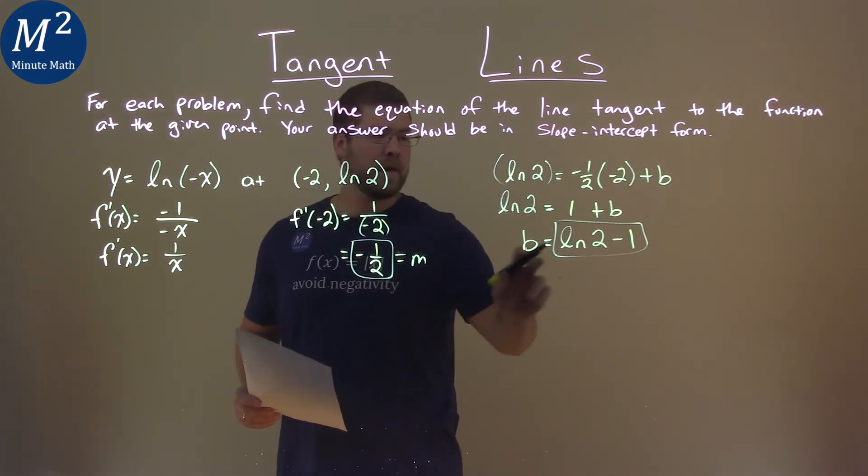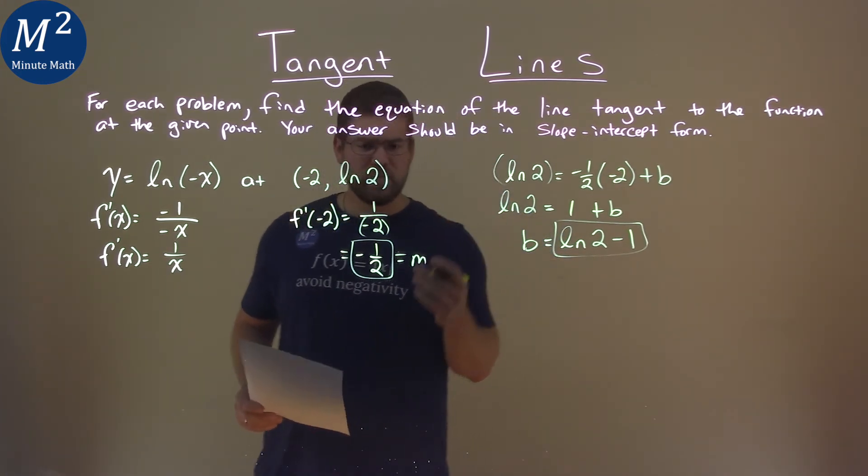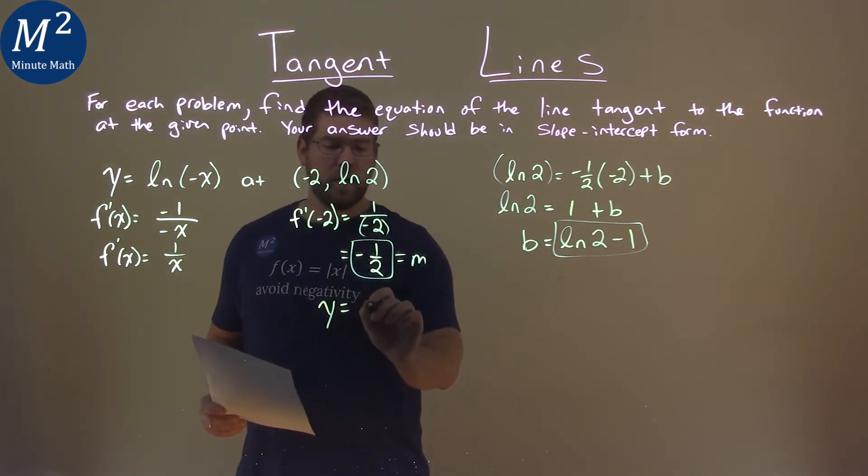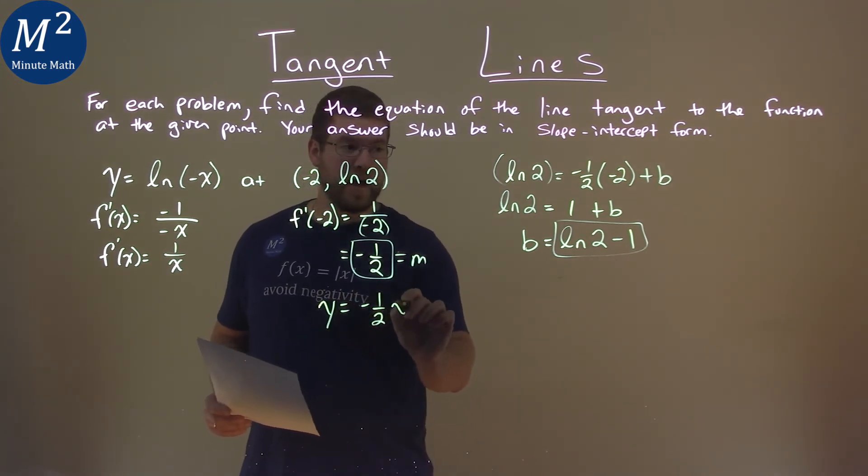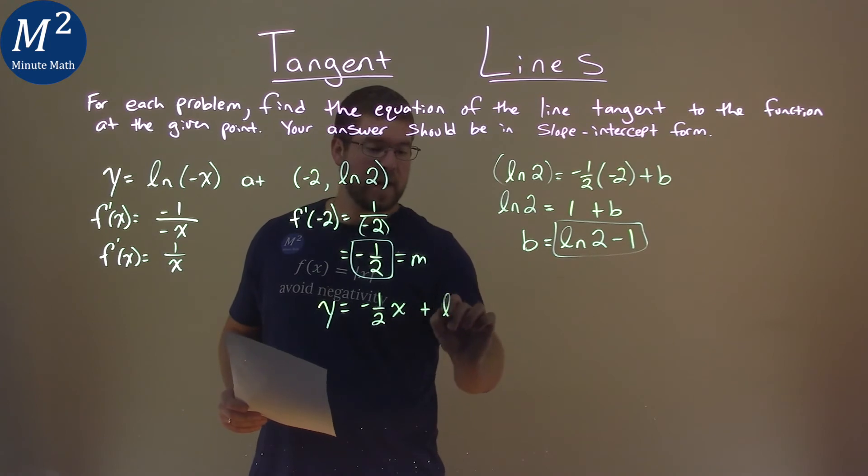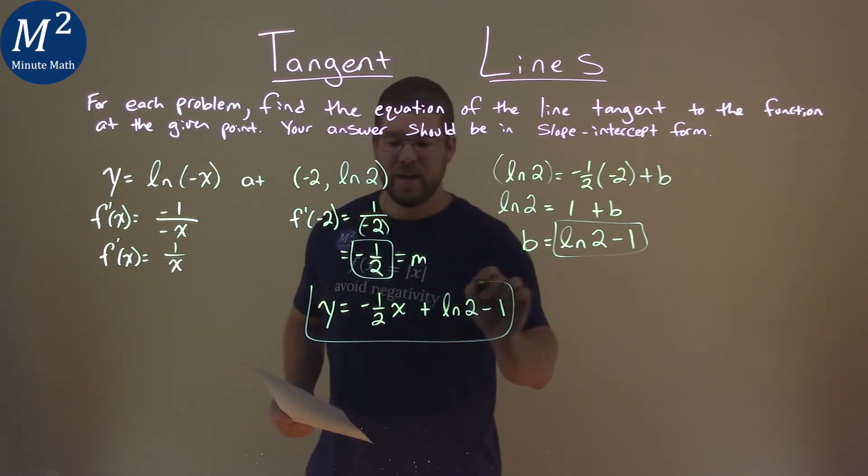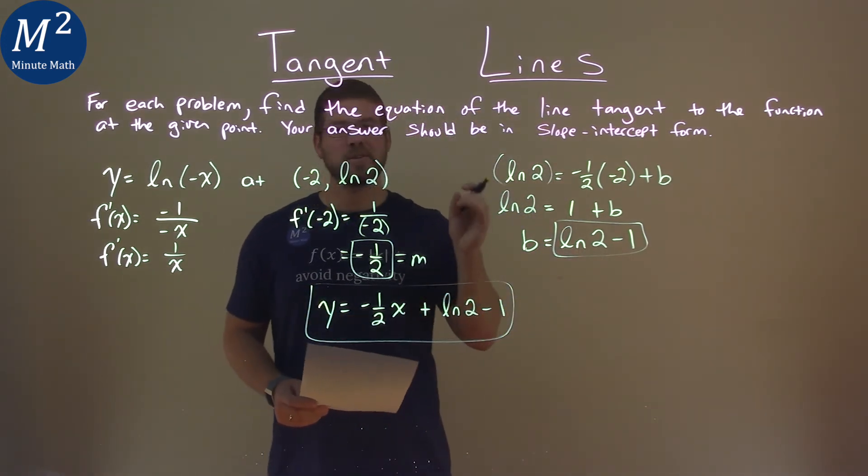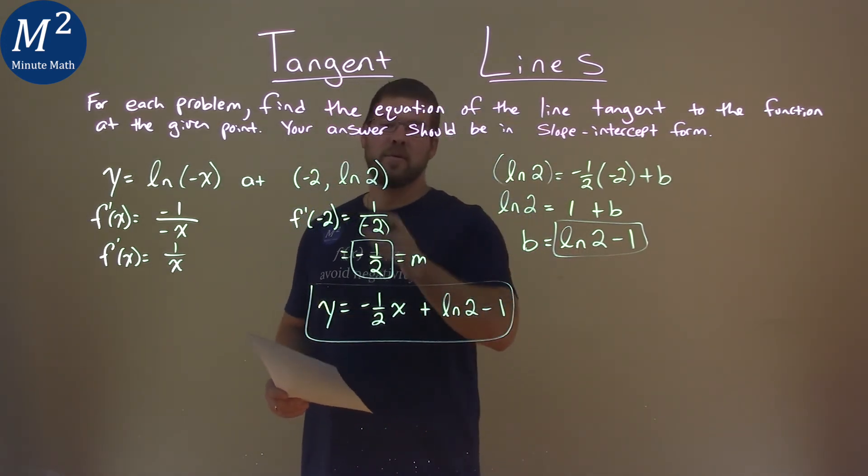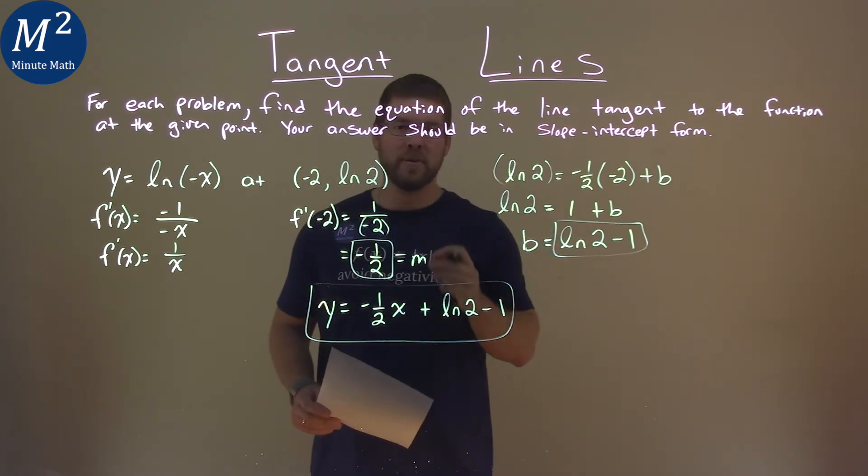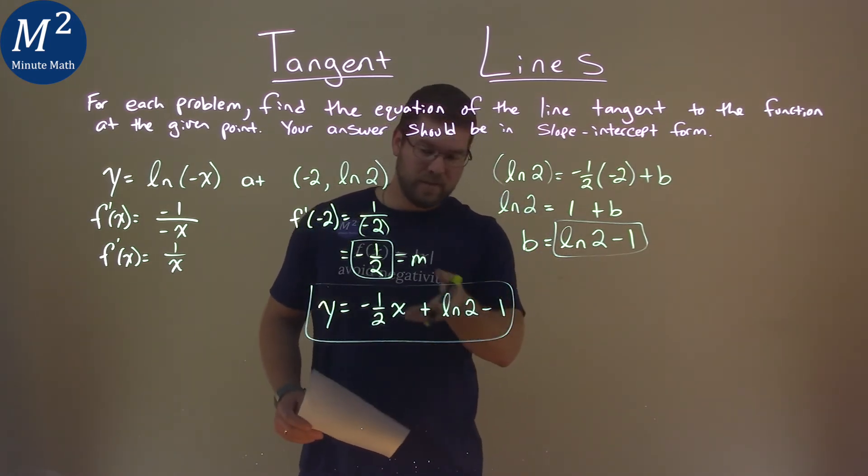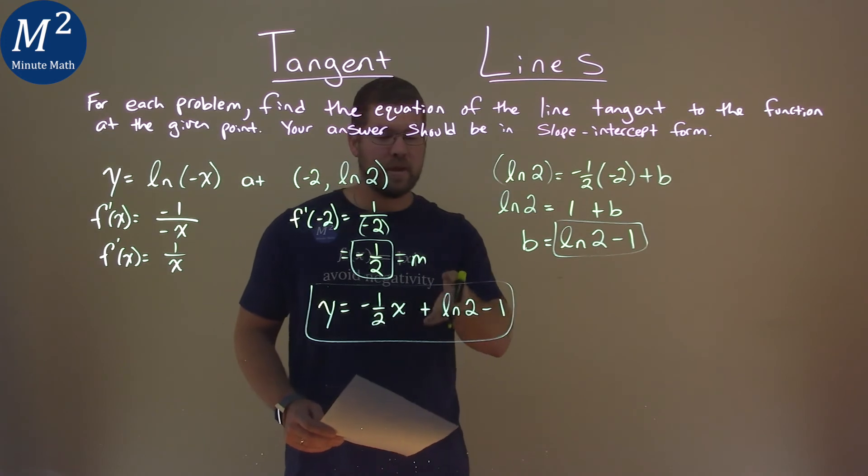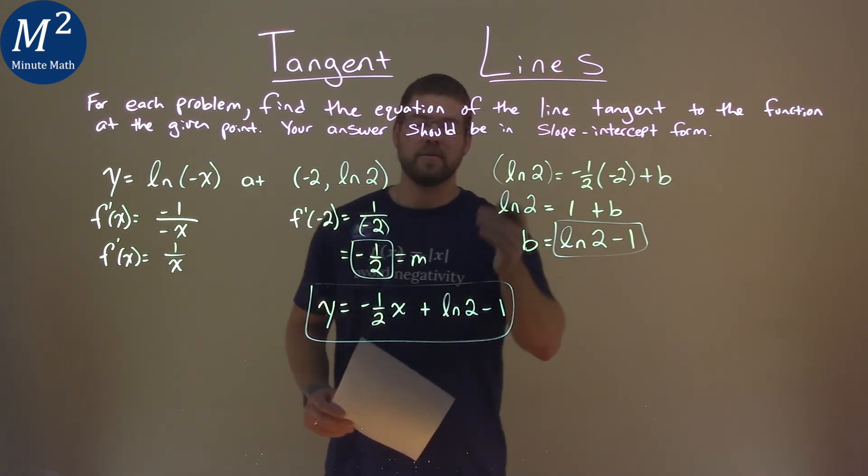So, we can combine our slope and our y-intercept to get the equation aligned. y equals a negative 1 half x plus a natural log of 2 minus 1 being our b value, and that is the equation of the line tangent to the function at our coordinate point, negative 2 comma natural log of 2. And again, the final answer is y equals negative 1 half x plus natural log of 2 minus 1.